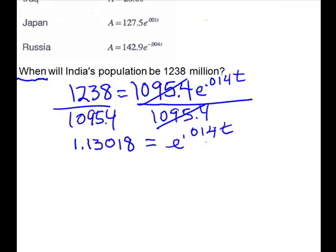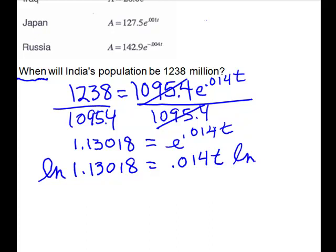Now I'm going to take the natural log of both sides to make this exponent come down. So I'll take the natural log of 1.13018 equals - this exponent will come down when you take that logarithm. The ln of e is 1, so you don't need that part, and then you're going to divide on both sides by 0.014 to isolate the t.